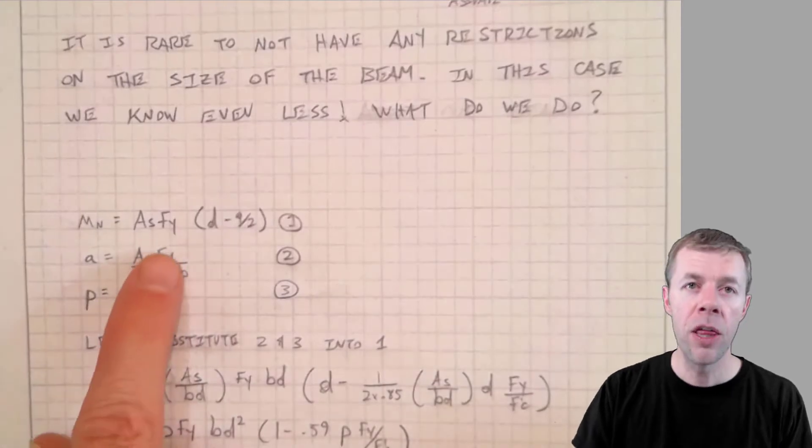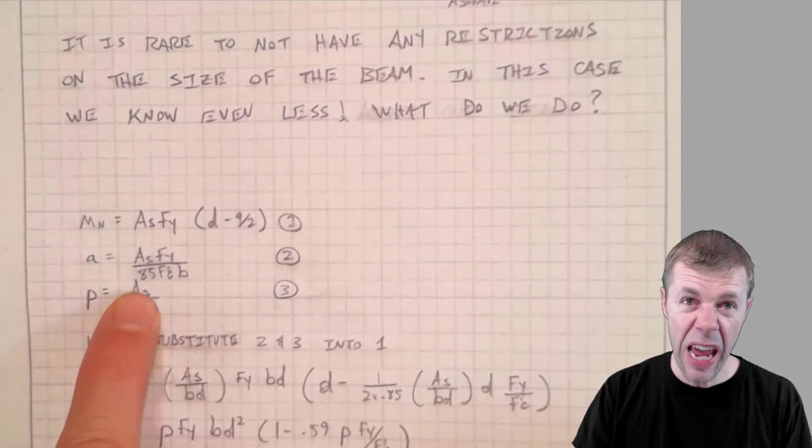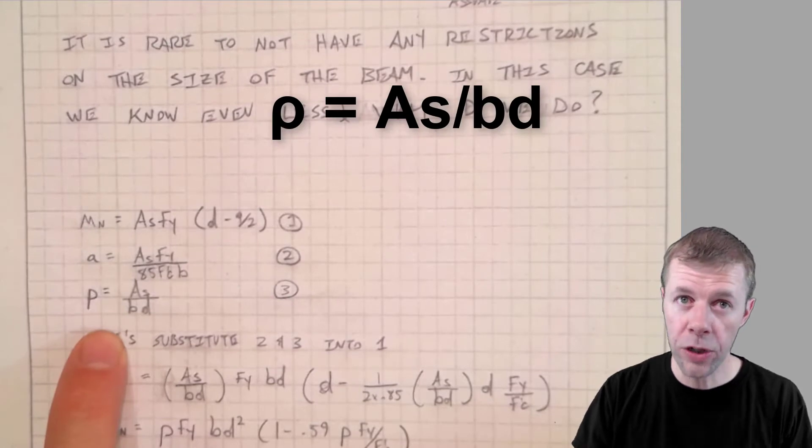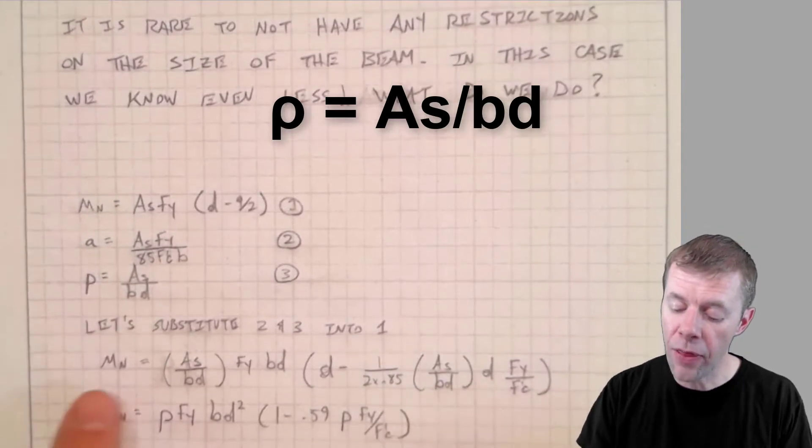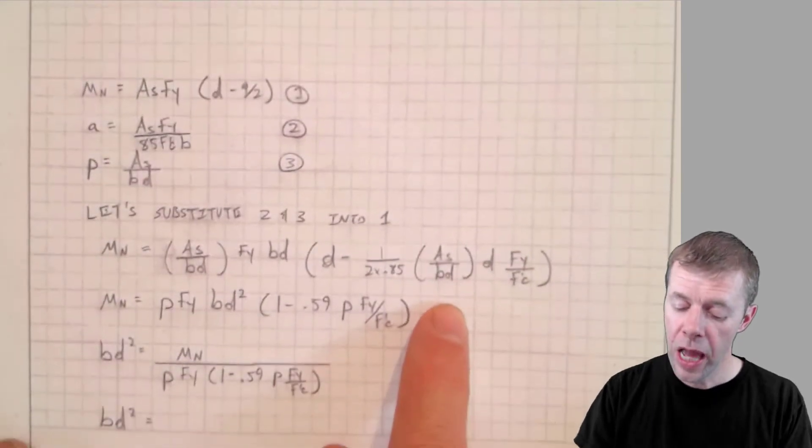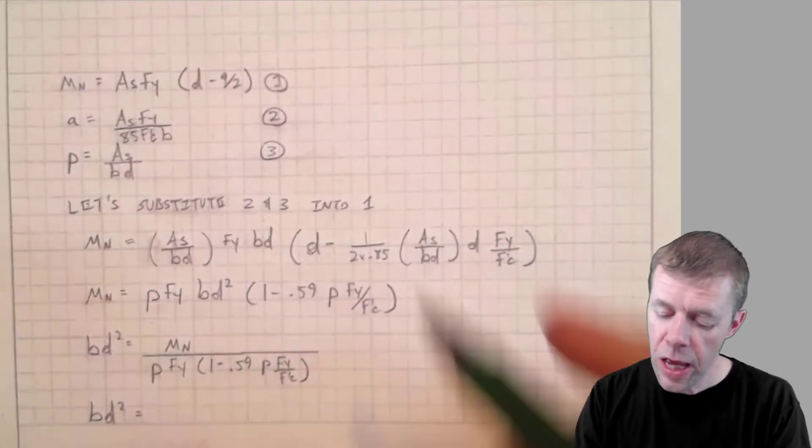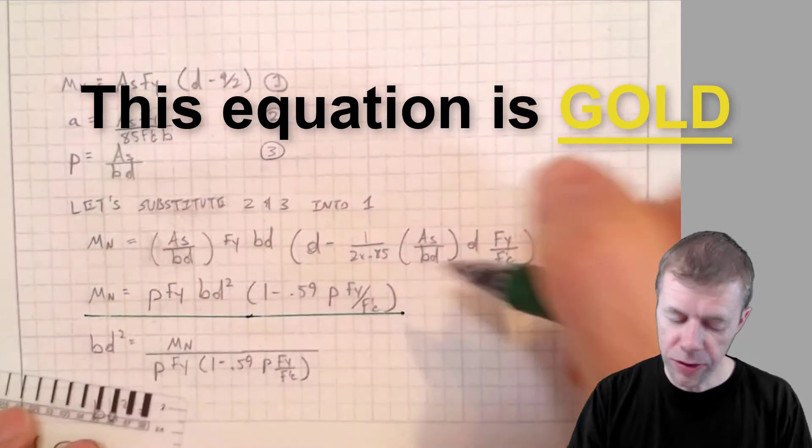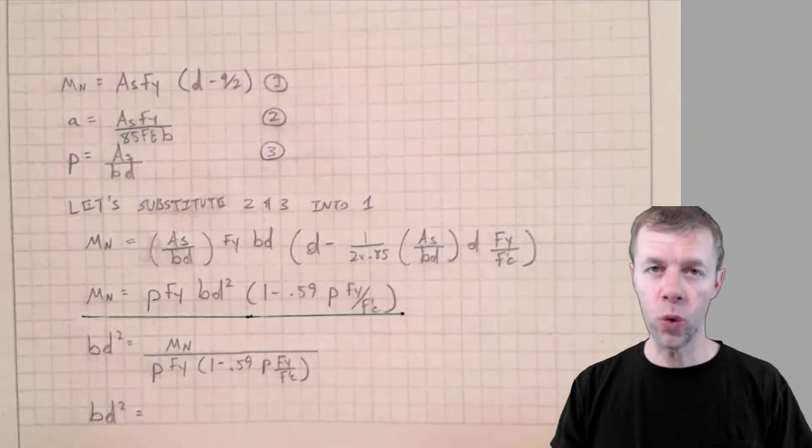So what do we do? We're going to take these three equations - the moment capacity, the A calculation, the rho or reinforcement ratio calculation. We're going to combine them together. That's what all this is doing down here. Bunch of algebra. And we get this mythical, awesome, cool, very cool equation.